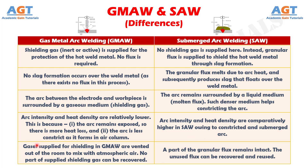Number 5: Gases supplied for shielding in gas metal arc welding are vented out of the room to mix with atmospheric air — no part of the supplied shielding gas can be recovered. Whereas in submerged arc welding, a part of the granular flux remains intact, and the unused flux can be recovered and reused.